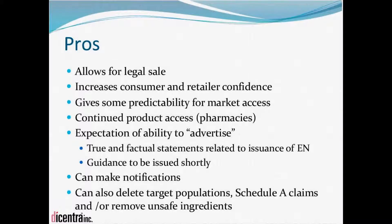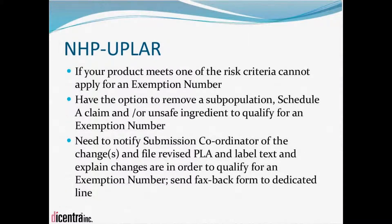For example, you can delete target populations, you can delete Schedule A claims, or you can remove unsafe ingredients. So if your product meets one of the risk criteria discussed before, you cannot apply for an exemption number. However, if you want to eliminate those risk criteria, the NHPD is allowing you to make certain changes. You have the option to remove a subpopulation — for example, if your product currently says it's for all ages, you could clarify that to say the product is for children 12 years of age and up and for adults, thereby removing the risk criteria for children under 12 years of age.